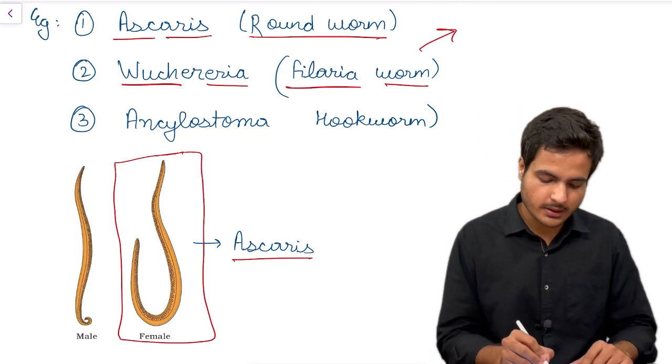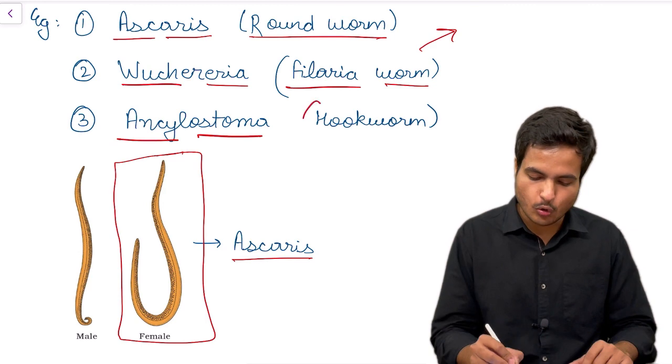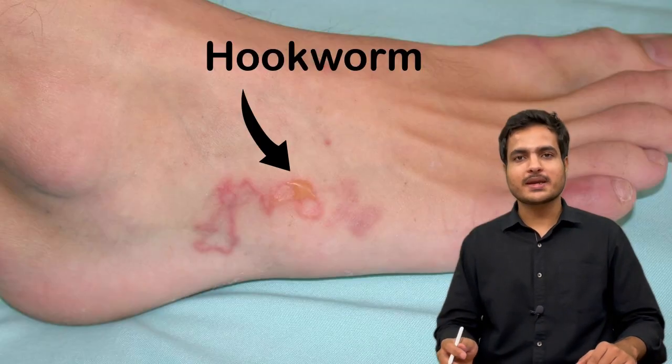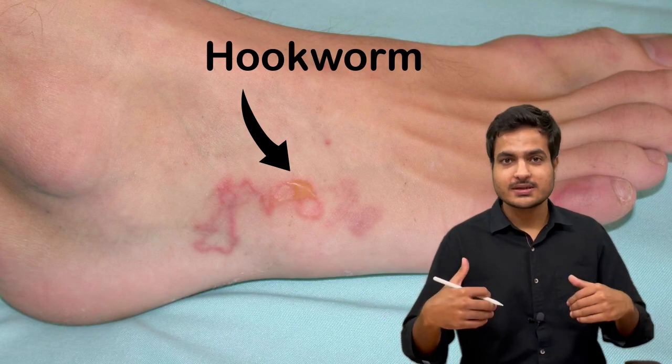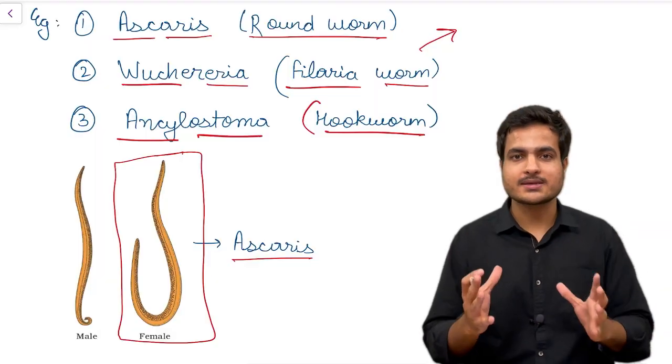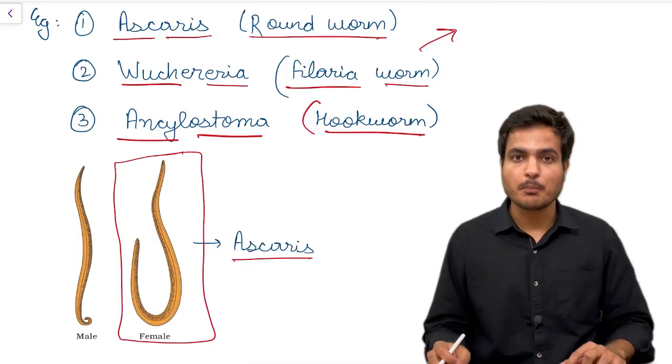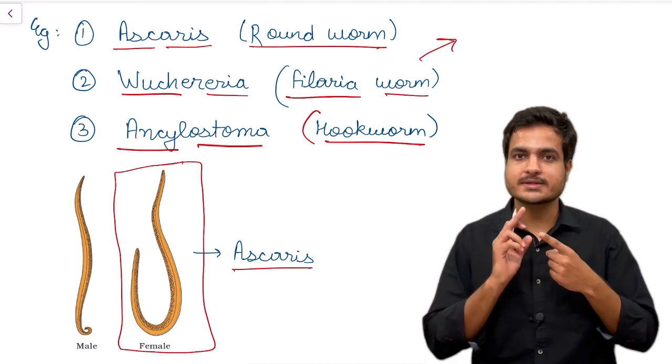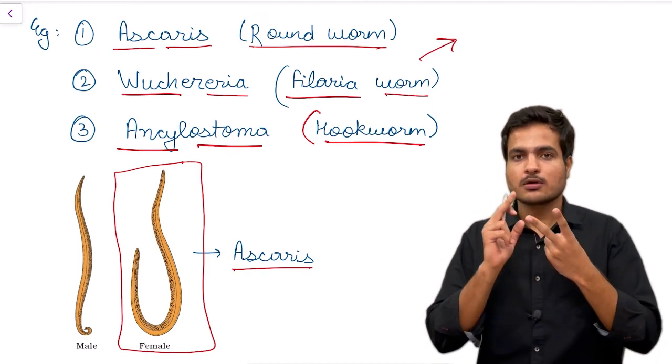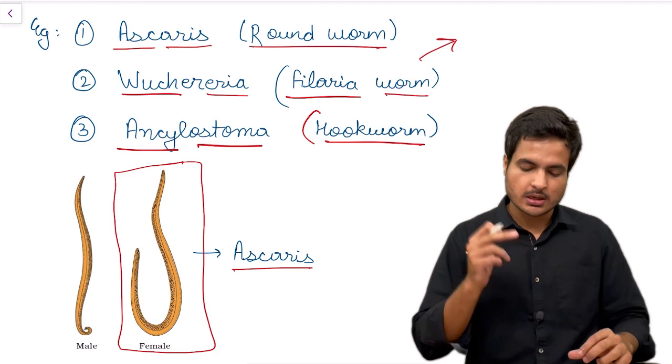Now let's talk about Ancylostoma, that is hookworm. Hookworm is also a parasite which gets into the human body and resides into the intestine of humans. We have three important examples: first is Ascaris, second is Wuchereria, and third is Ancylostoma.